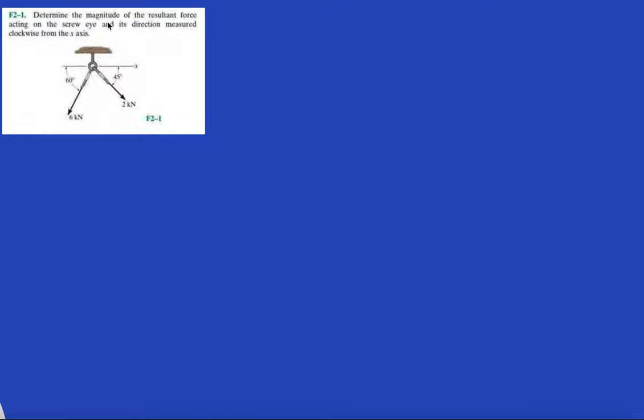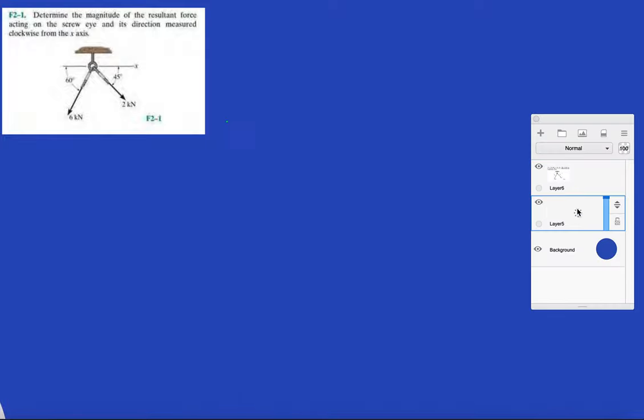So they want you to determine the magnitude of the resultant force acting on this eye-hook thing. In order to do that, if you're advanced, you know how to split vectors up into x and y components and you can do it that way. But they're slowly bringing you up to speed in the beginning sections of chapter 2. So we're going to be teaching you the sine law, which I'll write down here.